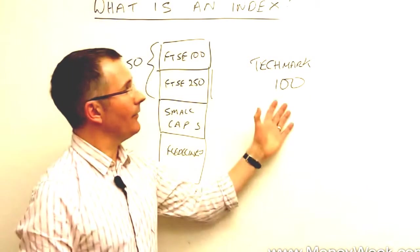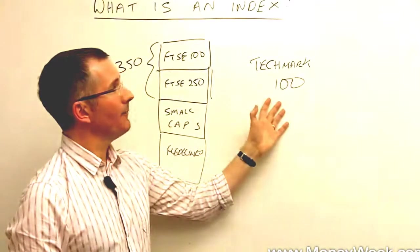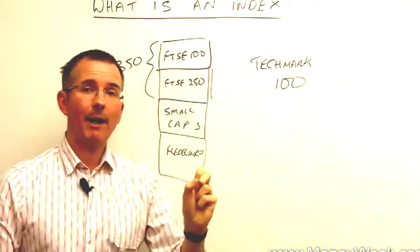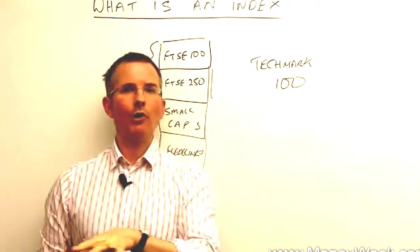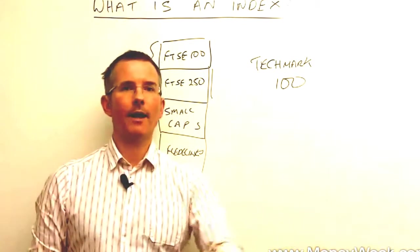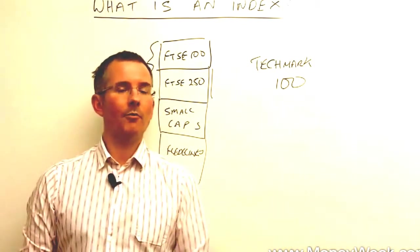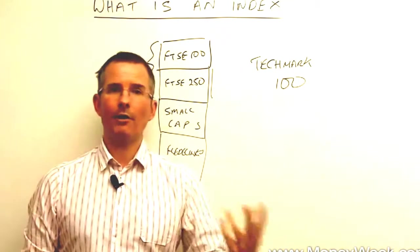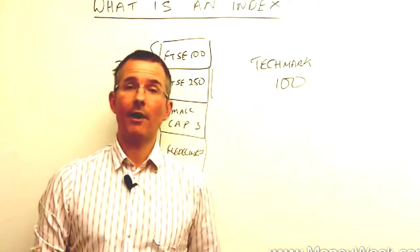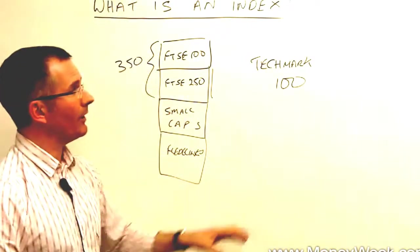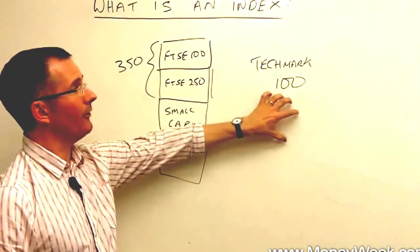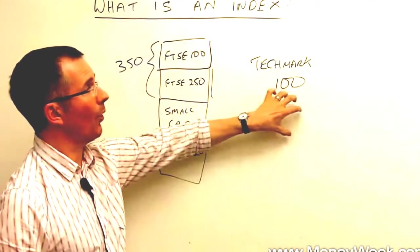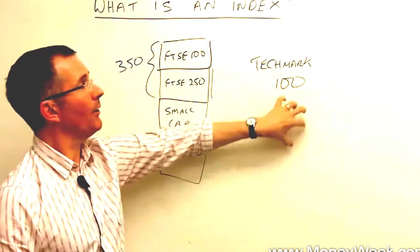So once you get the hang of indices, they can be designed, frankly, to include whatever members of the club that you like. Some of the investment banks come up with their own. They come up with their global titans 30. That's global titans, some random definition of big and important that the banks come up with. And there are 30 of them and they could be listed anywhere in the world in theory. So basically, once you get the hang of an index, in theory, it can be designed to give you the stocks that you want to follow as its components.